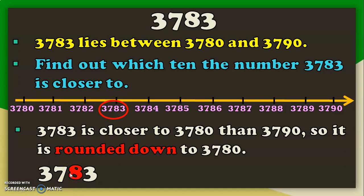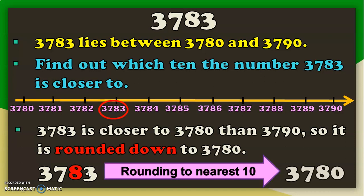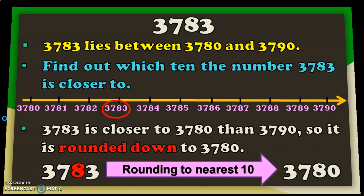There is another method for rounding, since number lines may not be practical for bigger numbers. Take the number 3783 and round it to the nearest 10. Look at the tens place — you have the digit 8. Then look at the digit immediately after it: if it is 5 or above, round up to the upper limit; if it is below 5, round down. In this case, the digit is 3, so we round down to the lower limit: 3780.